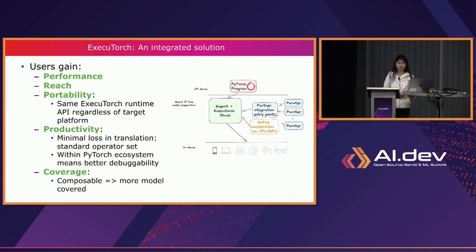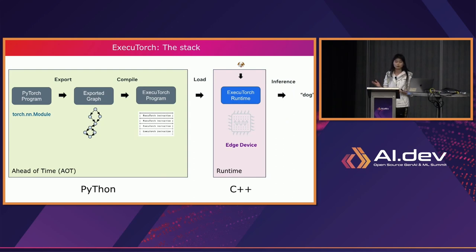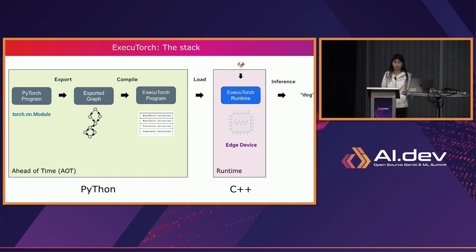We also improve model coverage because the composable nature of the solution means that if part of a model is not supported by the device, we can still handle it. In ExecuTorch, starting from the PyTorch program, we use torch.export — an API introduced in PyTorch 2.0 — to export a PyTorch program to a graph representation. ExecuTorch then enables transformation and optimization entry points for the target hardware, compiles down to an ExecuTorch program containing instructions that the runtime can execute. The ExecuTorch runtime, installed on edge devices, loads those instructions and performs inference.